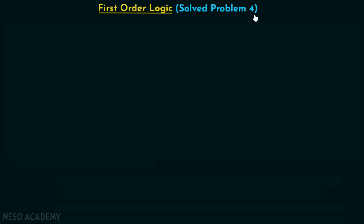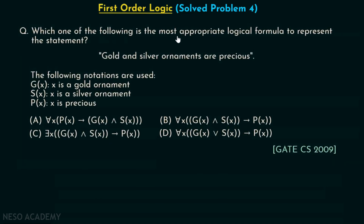Let's discuss solve problem 4 on first order logic. Which one of the following is the most appropriate logical formula to represent the statement: gold and silver ornaments are precious? The following notations are used: G(x) denotes x is a gold ornament, S(x) denotes x is a silver ornament, P(x) denotes x is precious. This question has been asked in GATE CS 2009. Let's move on to the solution.